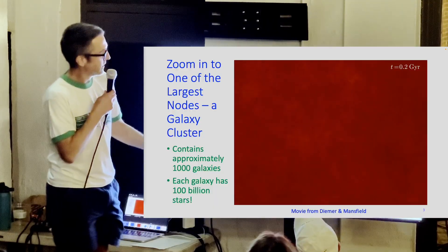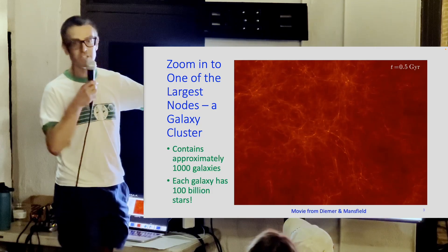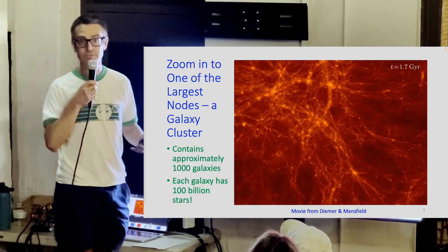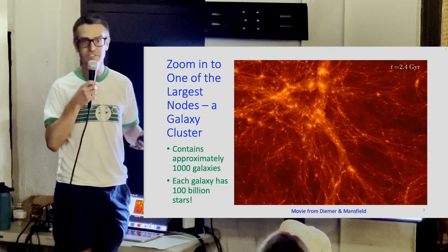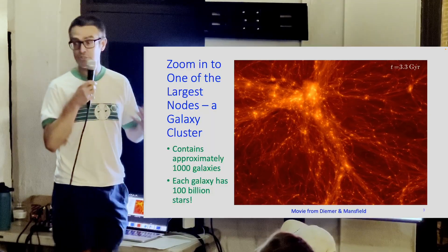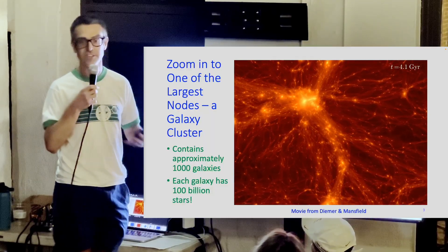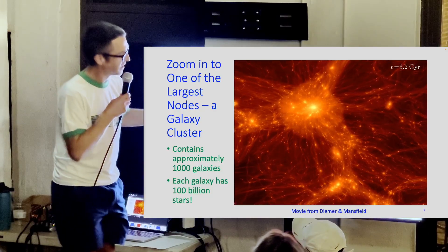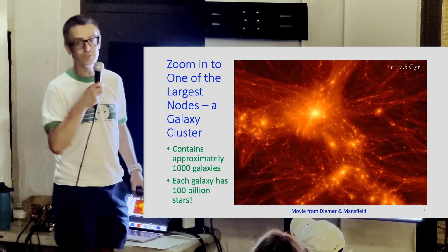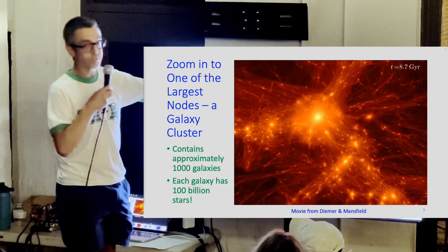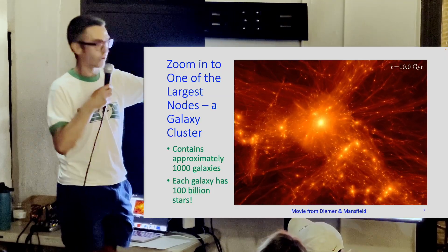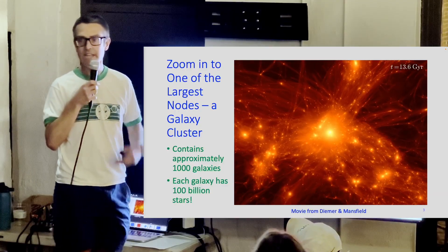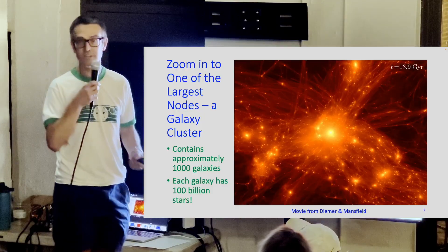Zooming in at one of the largest nodes: these are galaxy clusters, containing about 1,000 individual galaxies — each with something like 100 billion stars. You can see the matter flowing into the cluster and all the long, thin filamentary structures connected to it. The filaments themselves are not uniform — some are brighter and more concentrated, some dimmer and more diffuse. There's a pretty large diversity of constituents within these filaments.